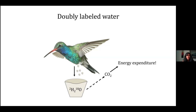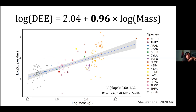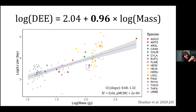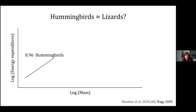We did that for a bunch of species and also included literature values to get an allometric equation. The bigger circles are species means and the smaller circles are individual values per species — a log of energy expenditure per day versus the log of mass. We found that hummingbirds have a slope of 0.96. That's slightly less than one, so they're not being as inefficient as they get larger as we originally thought. But they still have a really unusually high slope — closer to lizards than to birds — and that's really strange.